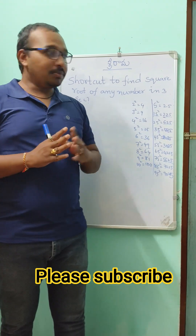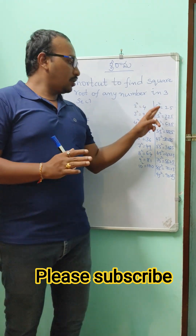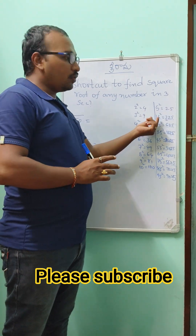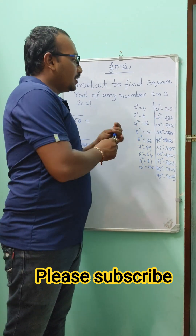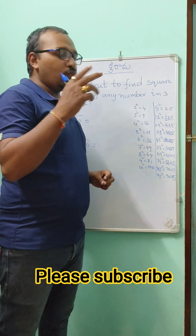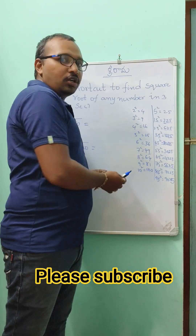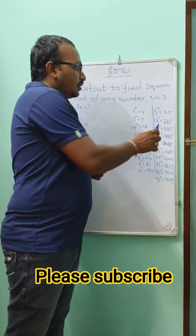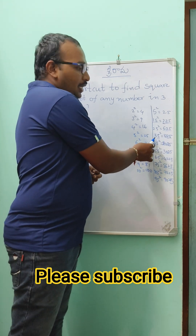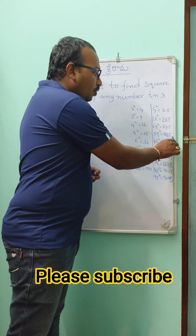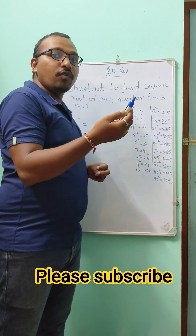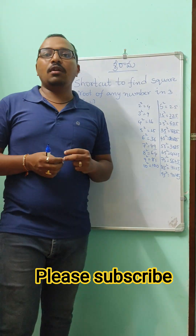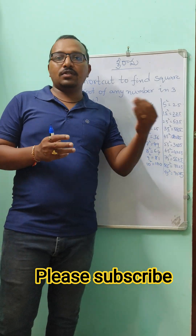The squares you are supposed to remember — here is a shortcut for numbers ending in 5. 5 squared is 25. If you want to find 15 squared: the 25 is common, then 1 after the number becomes 2, giving 225. For 25 squared: 25 is common, 2 after the number becomes 3, so 2 threes are 6 — that is why 25 squared is 625. Similarly, 35 squared: 25 is common, 3 after the number becomes 4, 3 fours are 12, so 1225. Like that you can find all squares of numbers ending in 5.